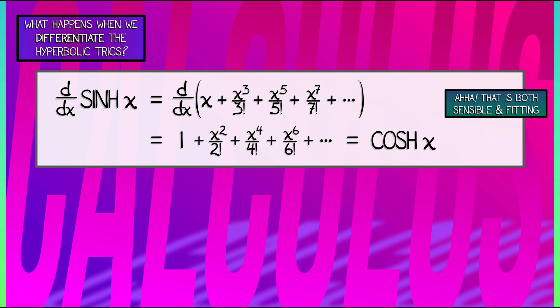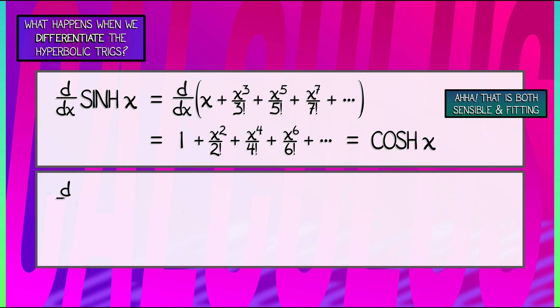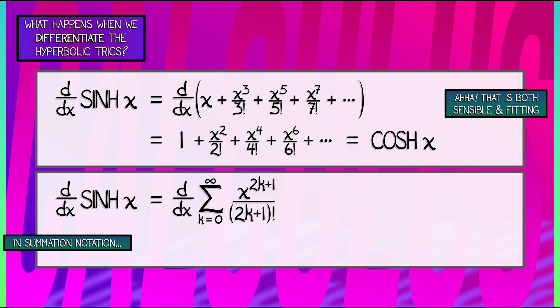Okay, now let's redo this a little more compactly using summation notation. The derivative of sinh is the derivative of the sum k goes from 0 to infinity x to the 2k plus 1 over quantity 2k plus 1 factorial. I'm going to move that differentiation under the summation sign, and I'm going to differentiate the terms.